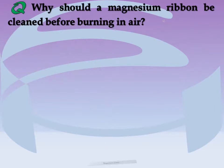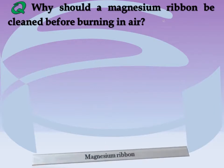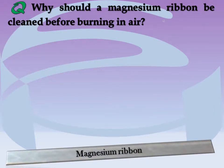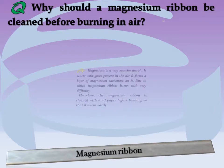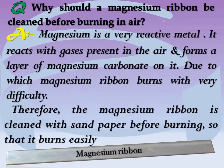Why should a magnesium ribbon be cleaned before burning in air? Answer: Magnesium is a very reactive metal. It reacts with gases present in the air and forms a layer of magnesium carbonate on its surface, due to which the magnesium ribbon burns with great difficulty. Therefore, the magnesium ribbon is cleaned with sandpaper before burning, so that it burns easily.